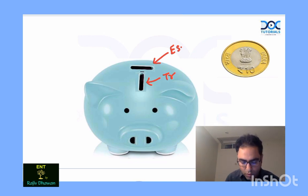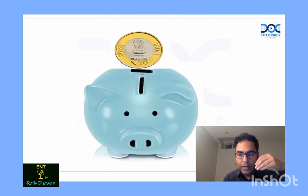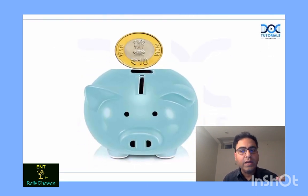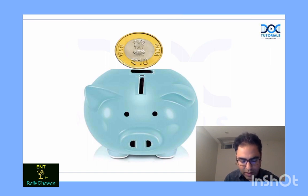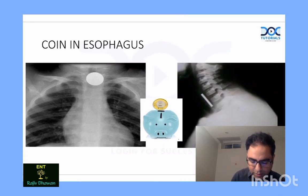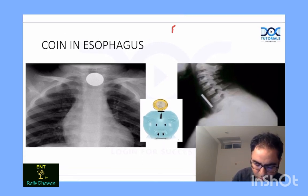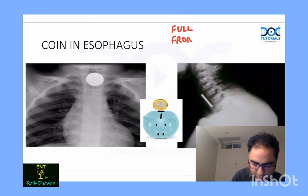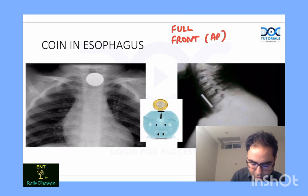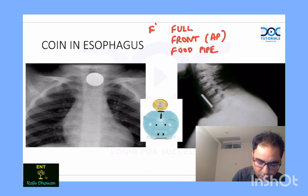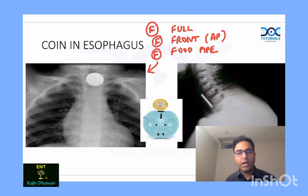Now, if a coin goes through the esophagus, it sits in this orientation. On an anterior-posterior x-ray view, you will see the full coin. Remember the 3F mnemonic we created in class: if the full coin is visible on the front x-ray (anterior-posterior view), then the coin is in the food pipe. This is exactly what is indicated by the x-ray given in this MCQ.